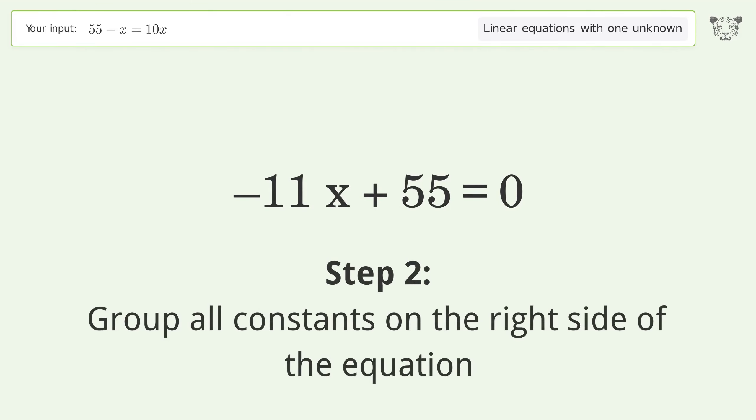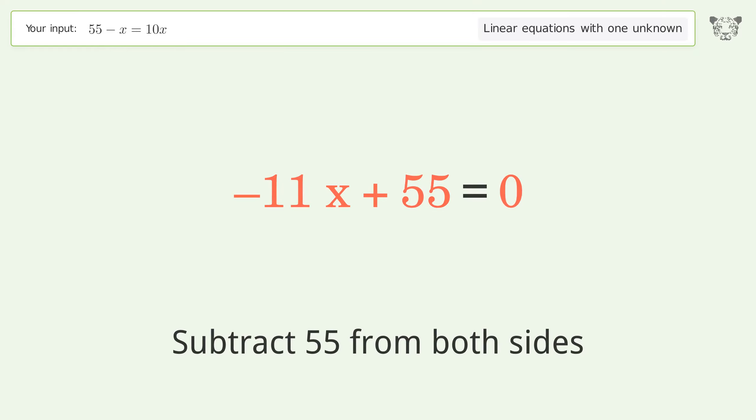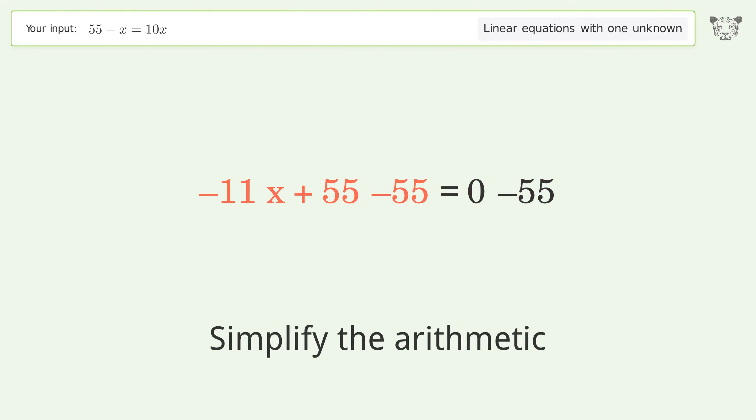Group all constants on the right side of the equation. Subtract 55 from both sides. Simplify the arithmetic.